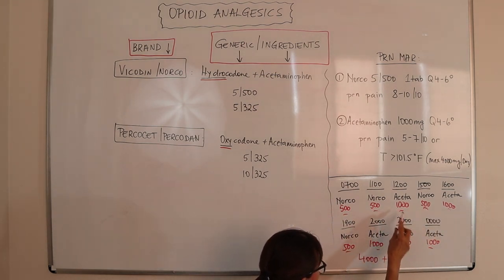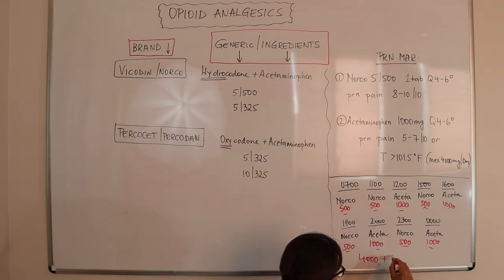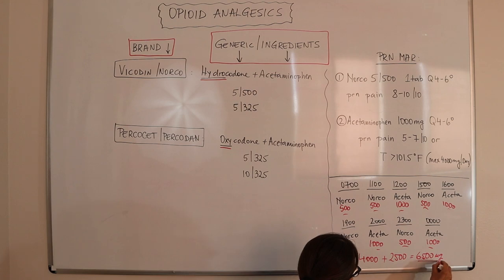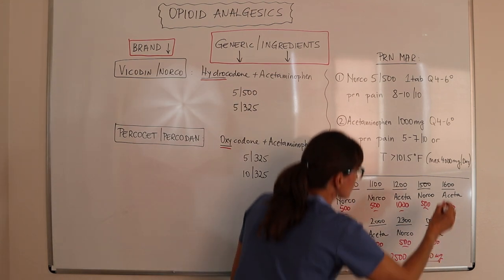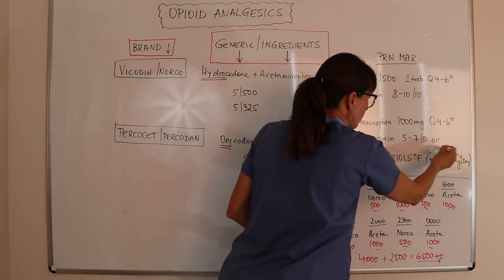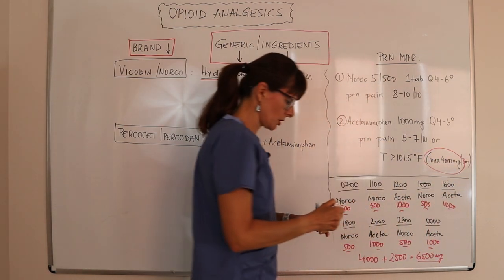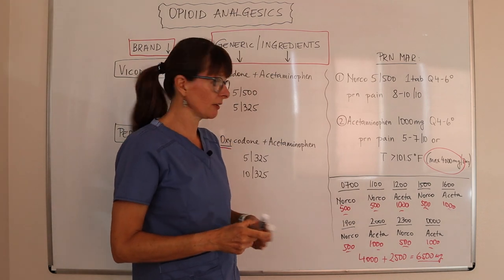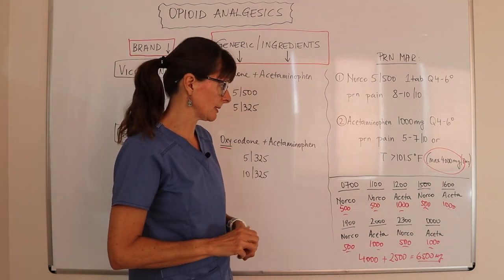Five doses of acetaminophen from the Norco at 500 milligrams each equals 2,500 milligrams, plus 4,000 milligrams from the standalone acetaminophen — that's a total of 6,500 milligrams of acetaminophen, which is way too much. The maximum per day we can give is 4,000 milligrams.